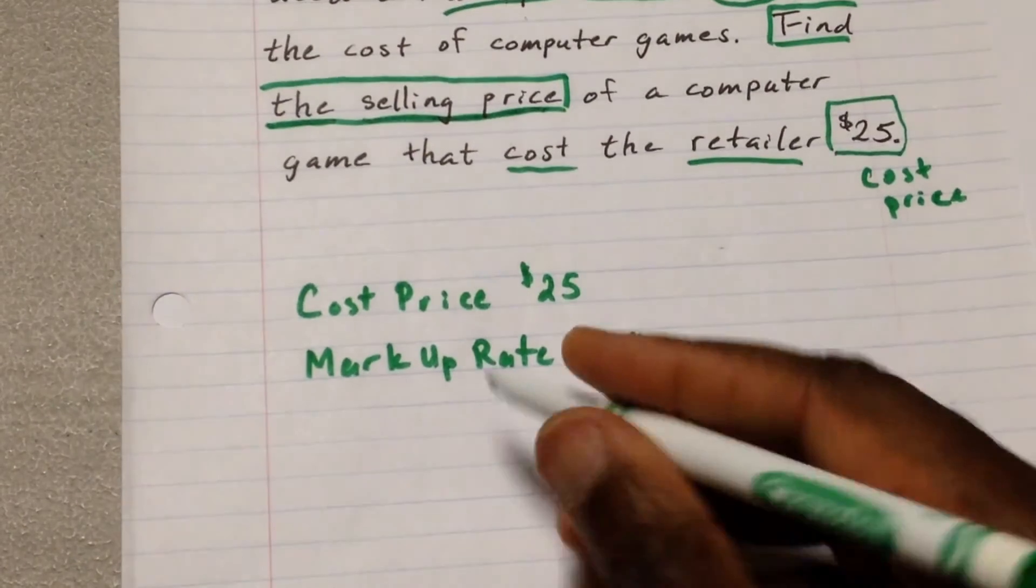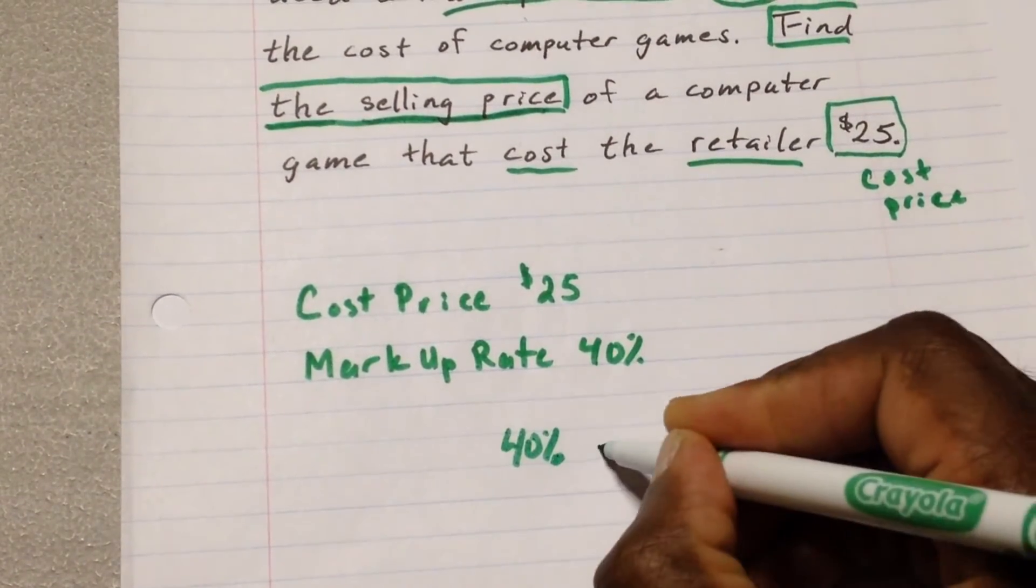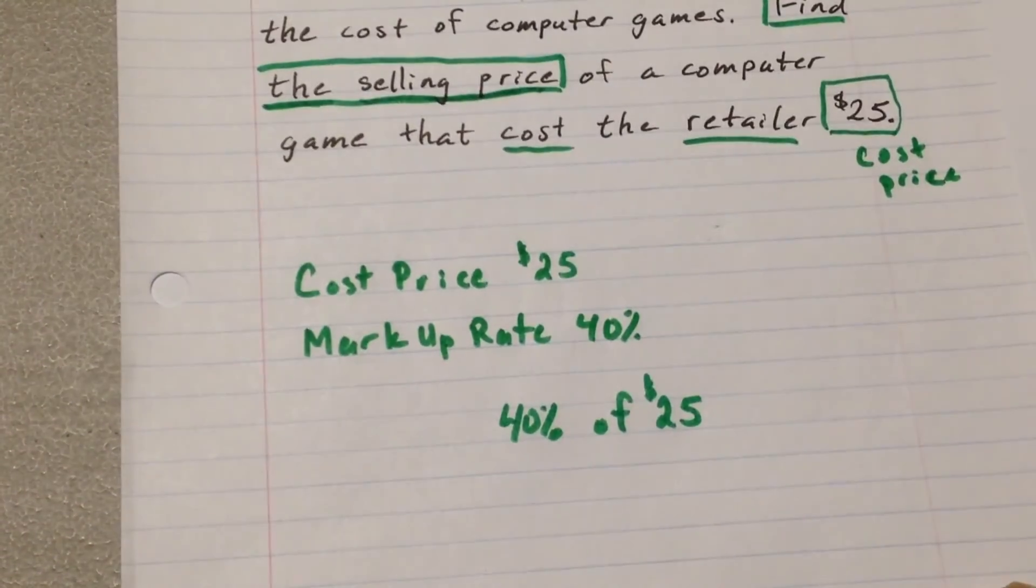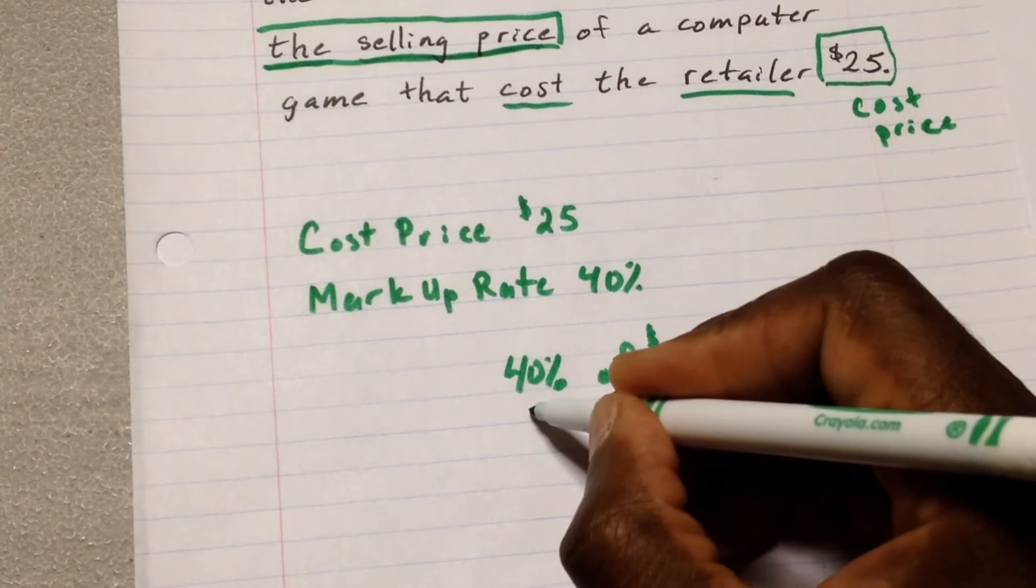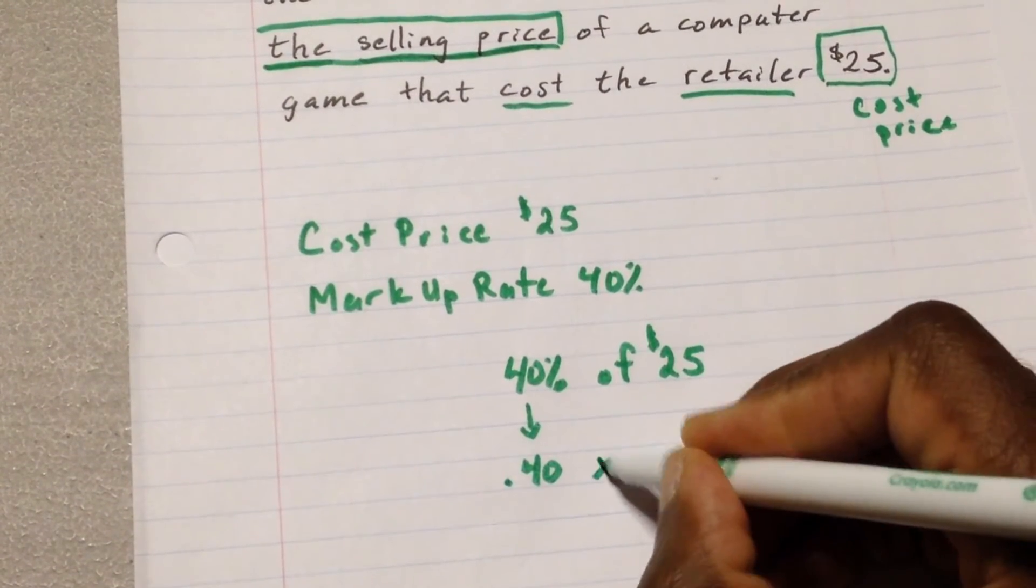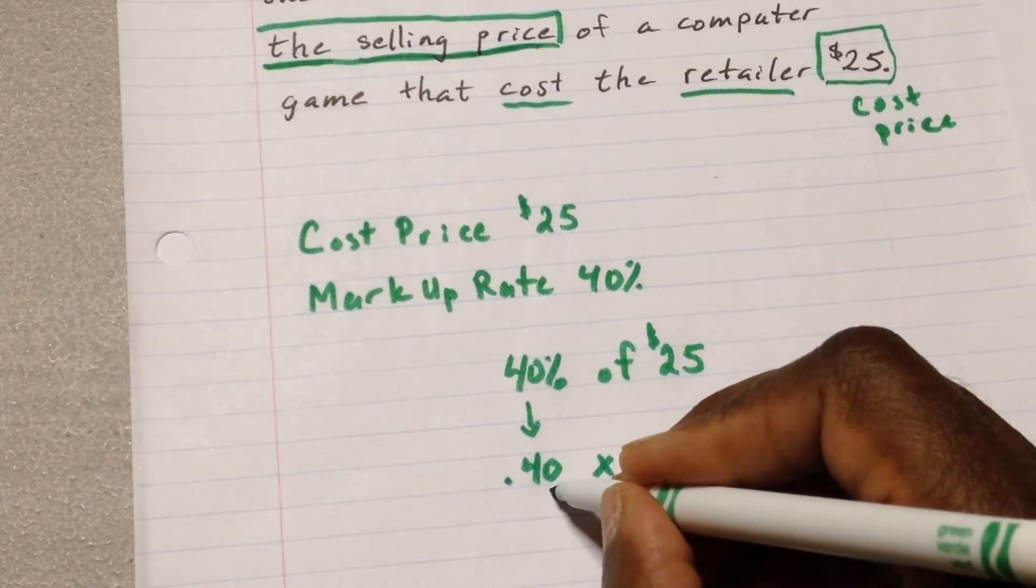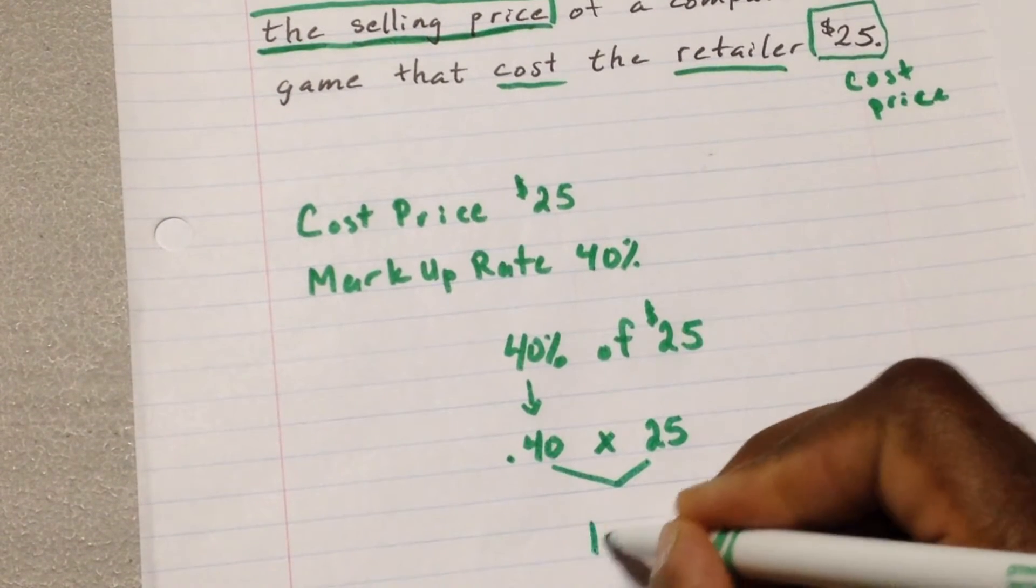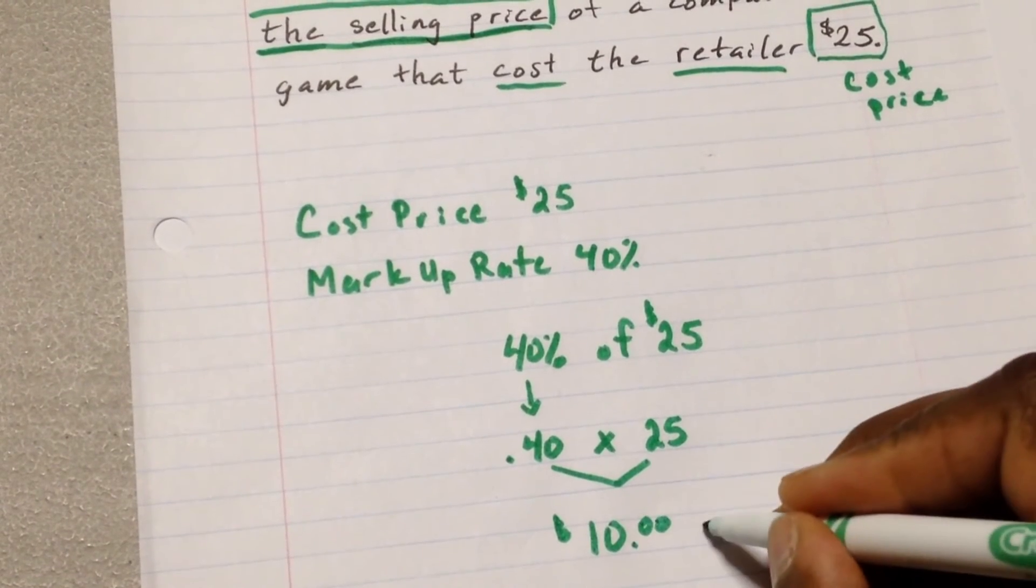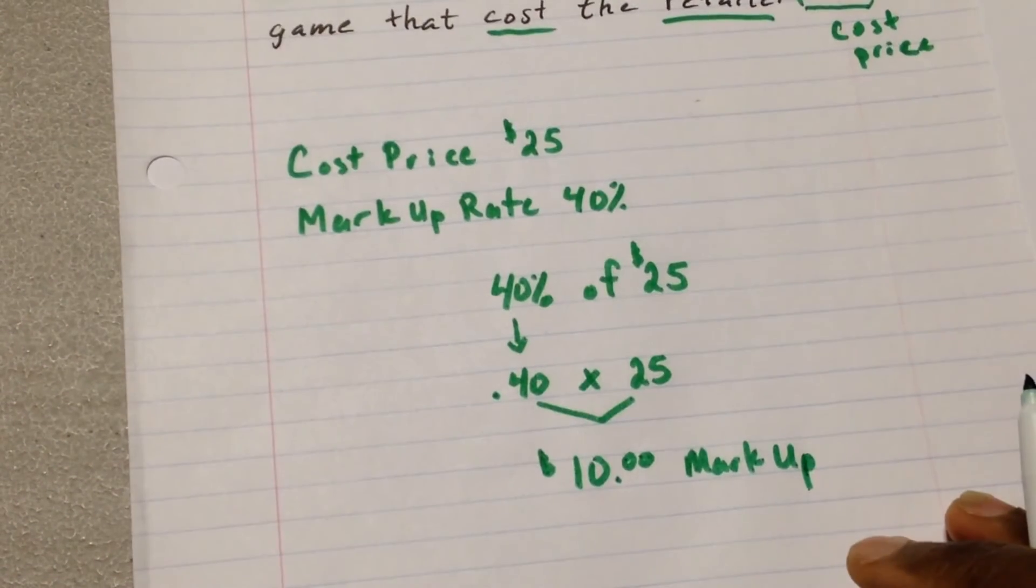So let's start with the 40% of $25. Let's see what the markup will be. So that's going to be decimal point 40 multiplied to $25. And when we do the math, we're going to come out to $10. So $10 will be my markup price. That's how much we're marking it up by, by $10.